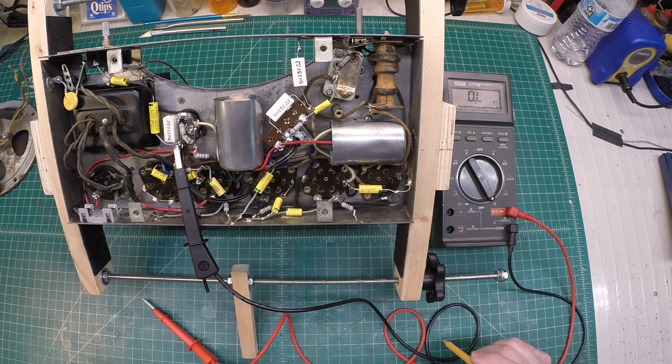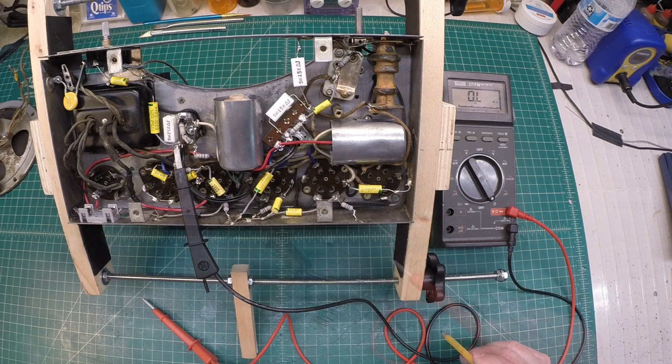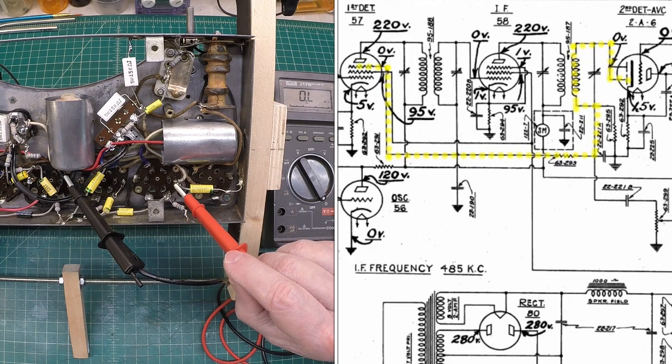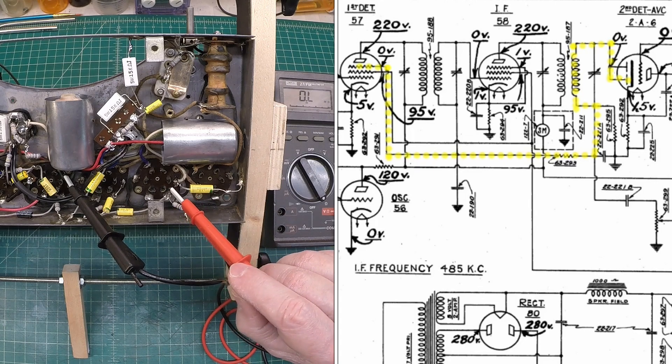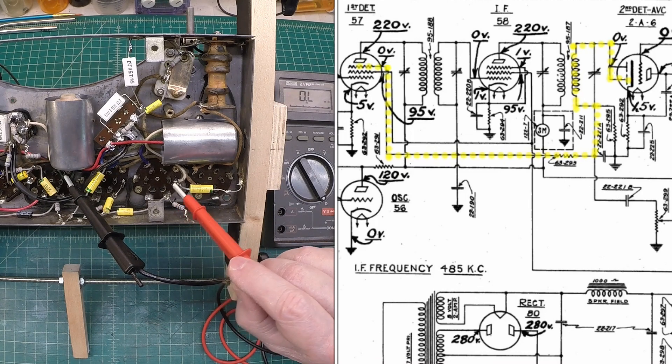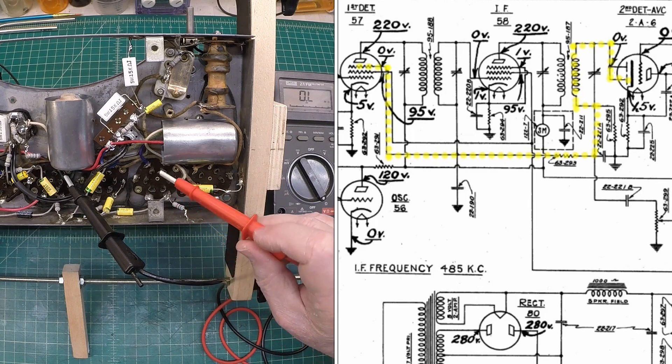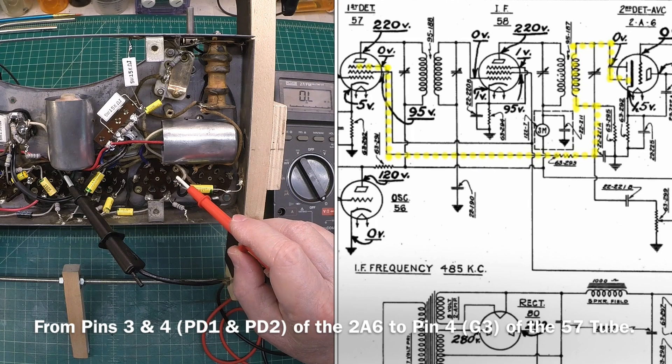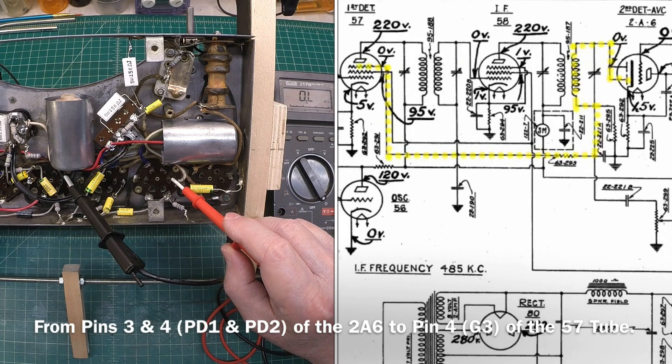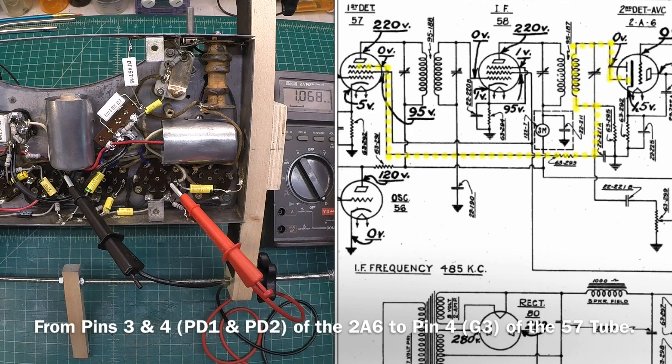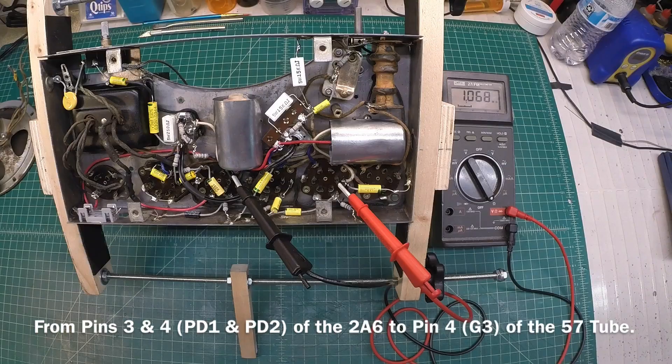But that creates the bias voltage, the negative bias voltage over to the 59 tube, along with another dropping resistor. And if you look at what I have highlighted here, we're looking for a one meg resistor that I placed in there for the 63-293. It was called out at 990k, and I placed two 2 meg resistors there in parallel. So we can test between the plates or diodes there on the 2A6 back to grid number three, pin number four of the 57. So 2, 3, 4. And you can see that we're reading right at our 1 meg. So we're good there as well.